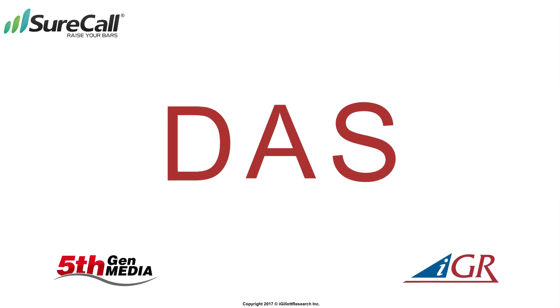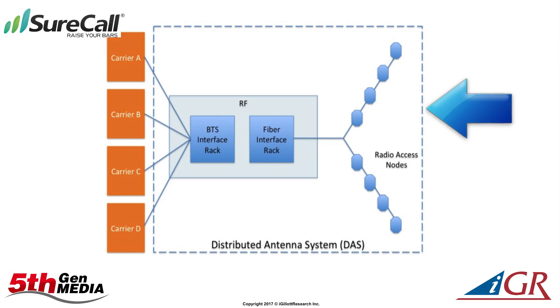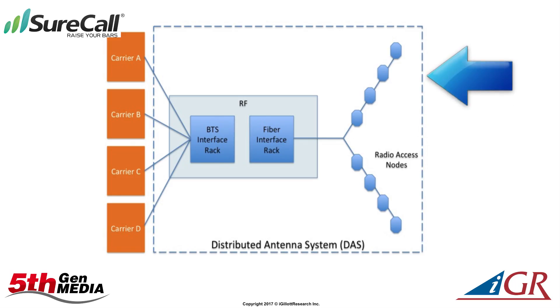A DAS extends the coverage of a cellular network in an outdoor or indoor area. As the name suggests, rather than using a single antenna configuration on a cell tower, DAS uses an array of small antennas spread over a wide area.